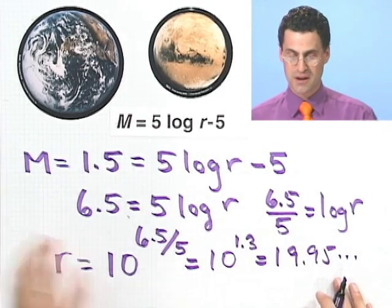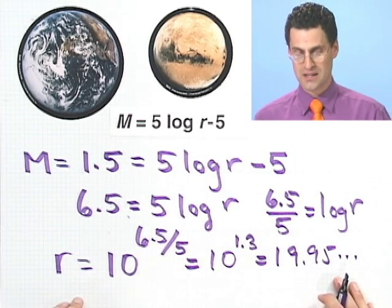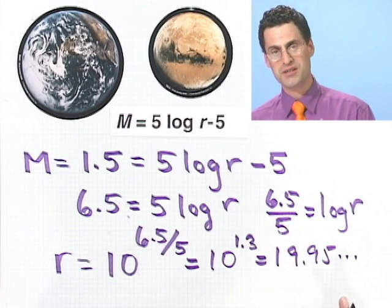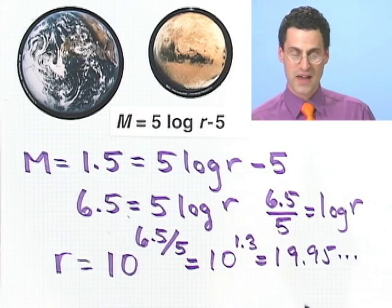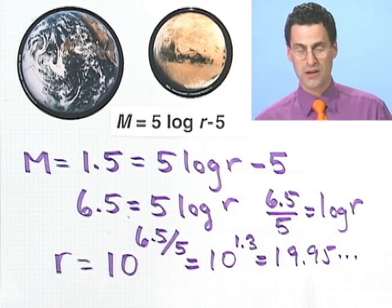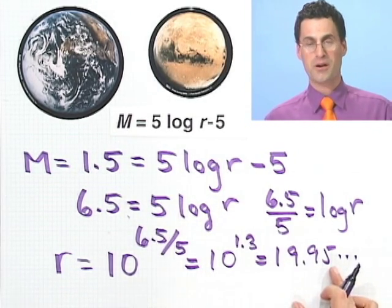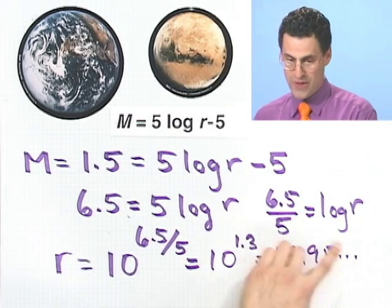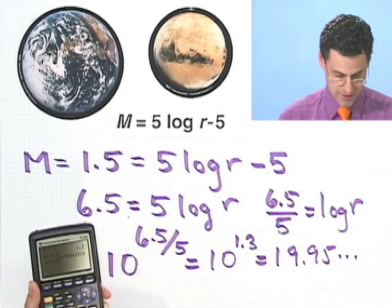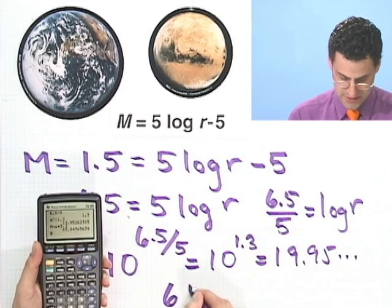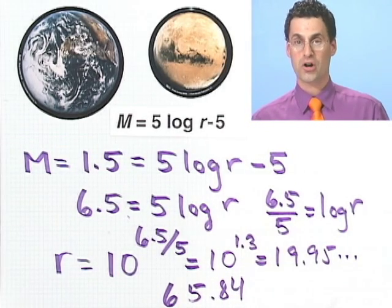And these units, by the way, these are in parsecs. So it's 19.95 parsecs. And it turns out that one parsec is approximately 3.3 light years. So 19.95 parsecs, that times 3.3 light years. So if you want to know light years, let's multiply that by 3.3. So the star that I have in mind is 65.84 light years away from Earth.